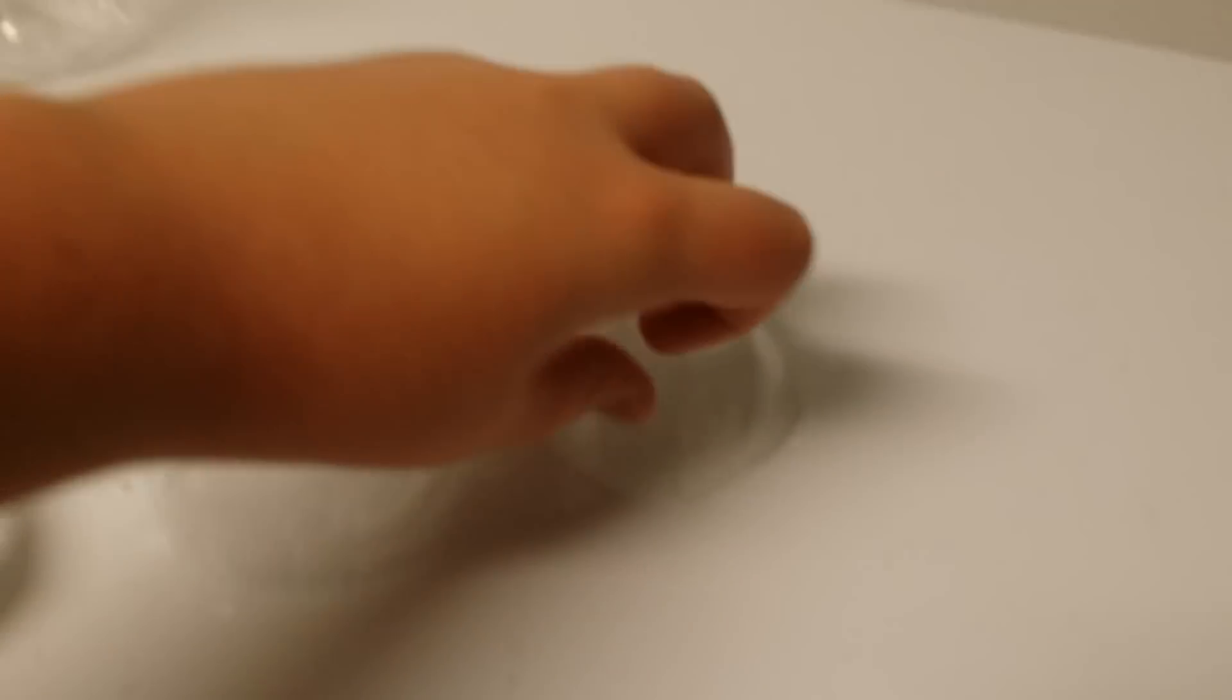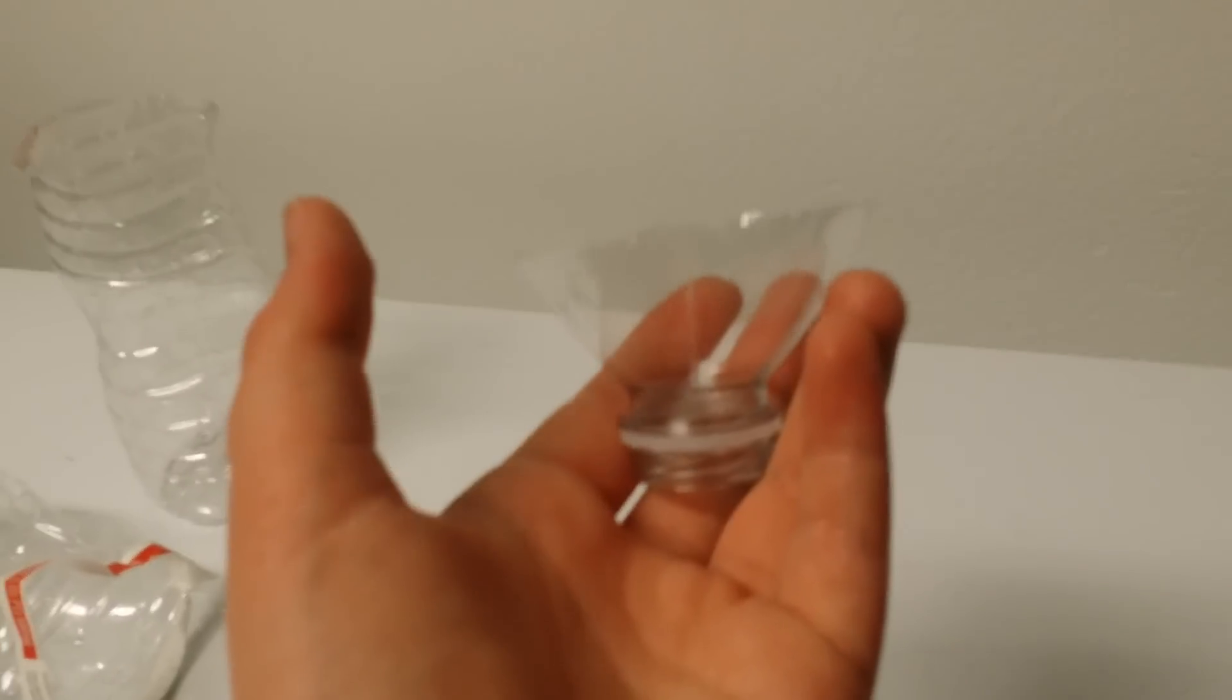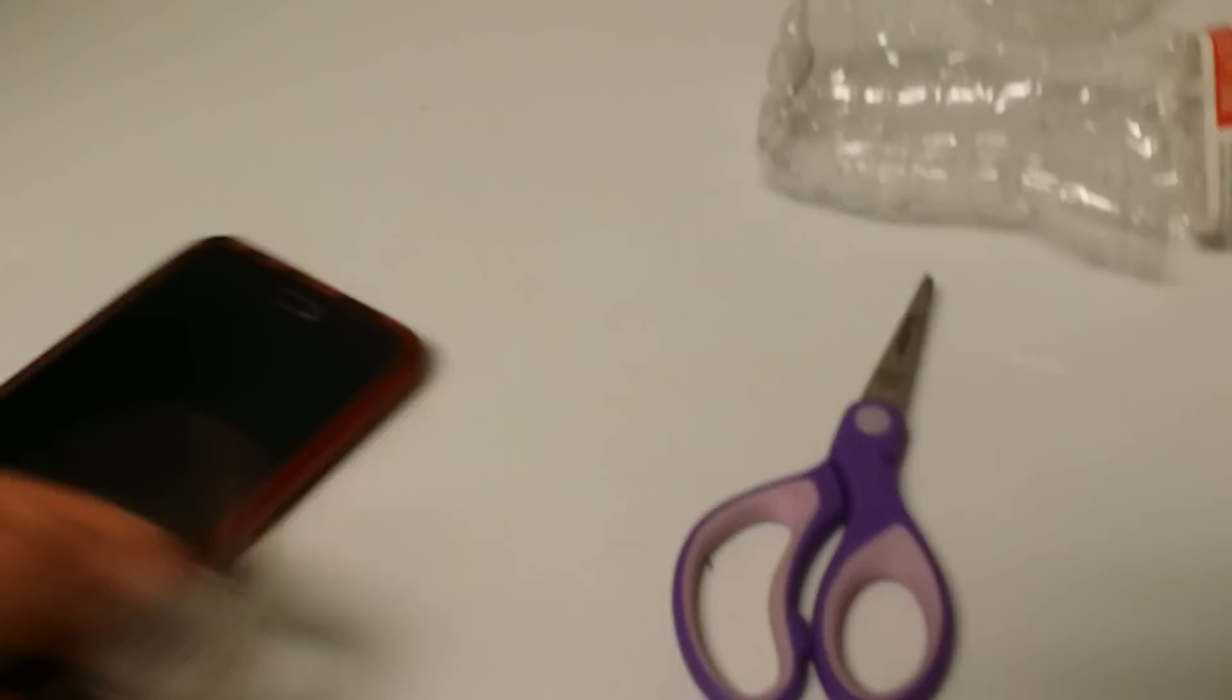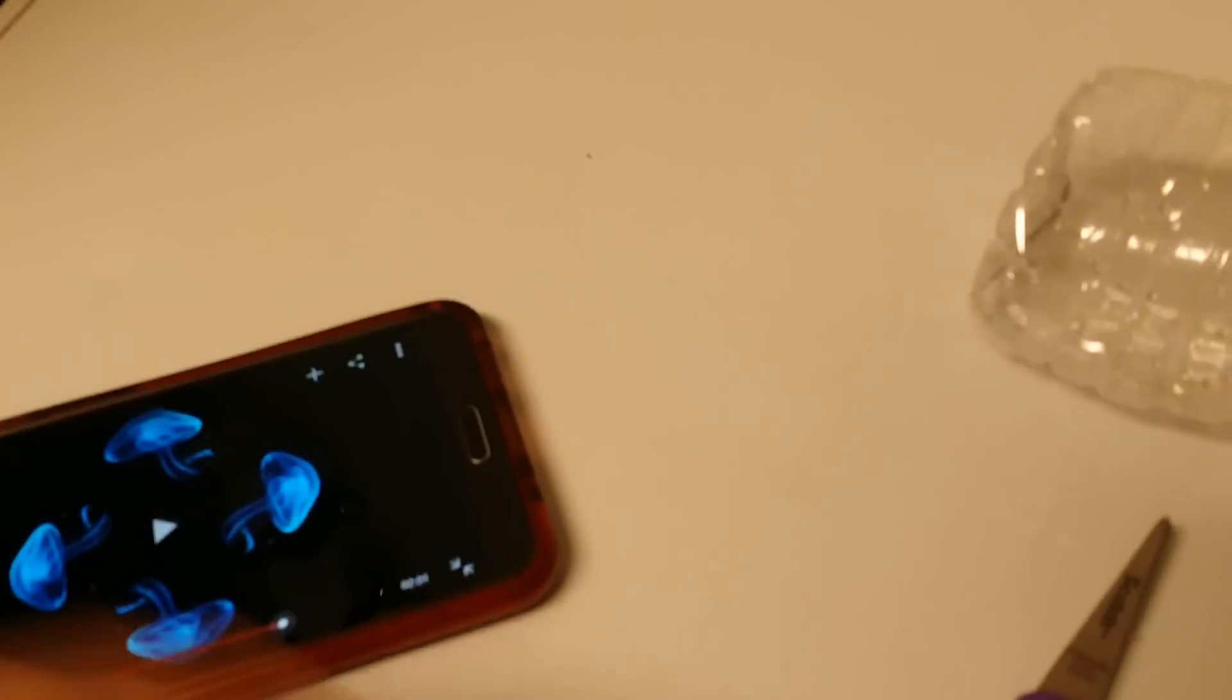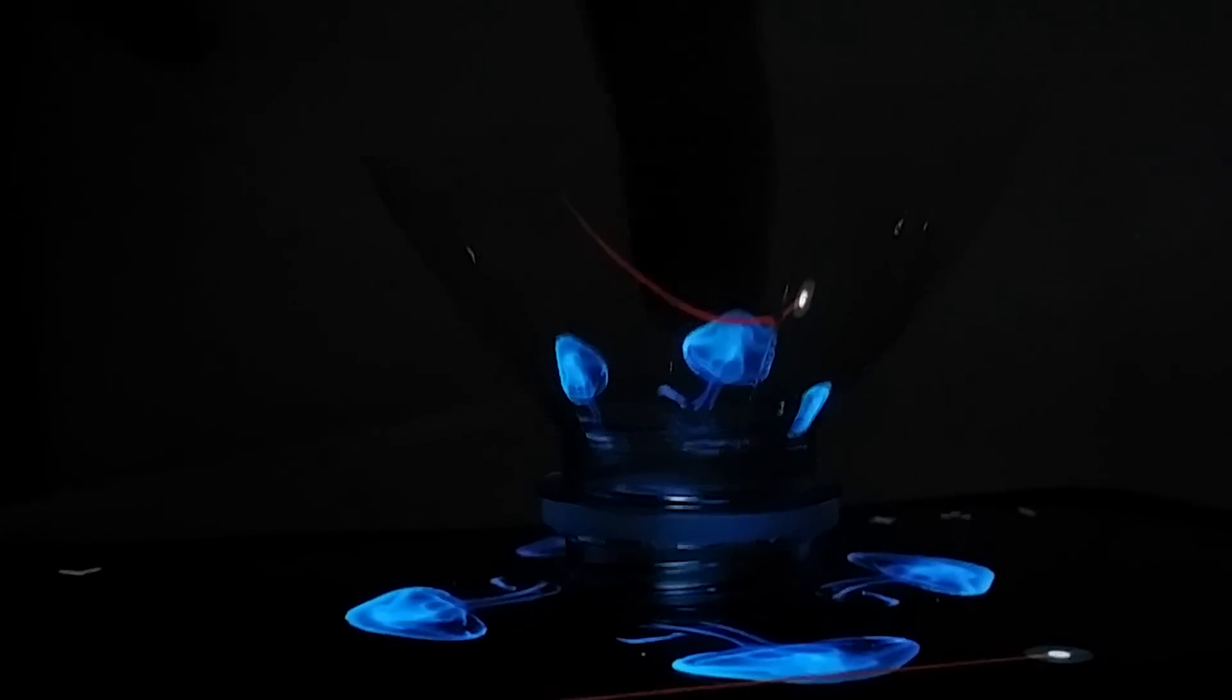So here is your smartphone hologram projector. Basically, you're just going to put this here. And on YouTube, they have special videos for this to project. Type in hologram videos and find a video that looks like this. Then you're just going to flip this way, place this here, and let's hit the lights. And check this out.